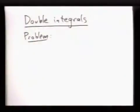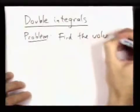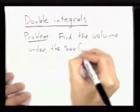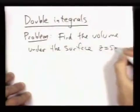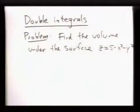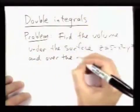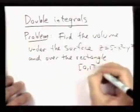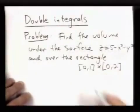Say that we want to find the volume under the surface z equals 5 minus x squared minus y squared, and over the rectangle [0,1] × [0,2] in the xy plane.